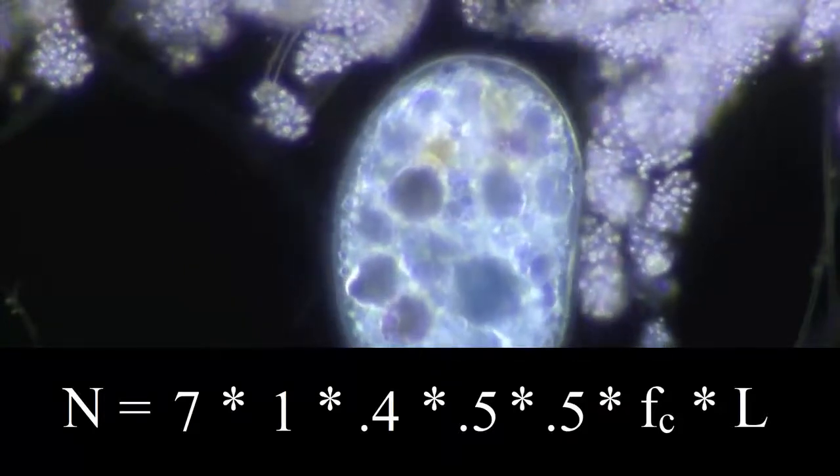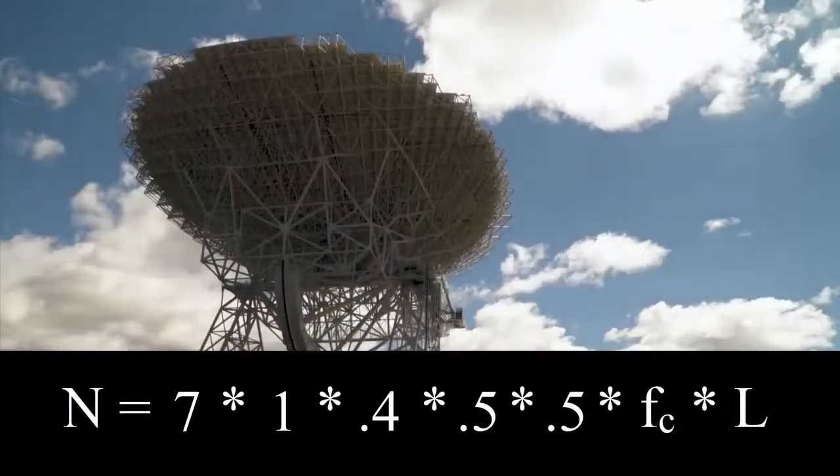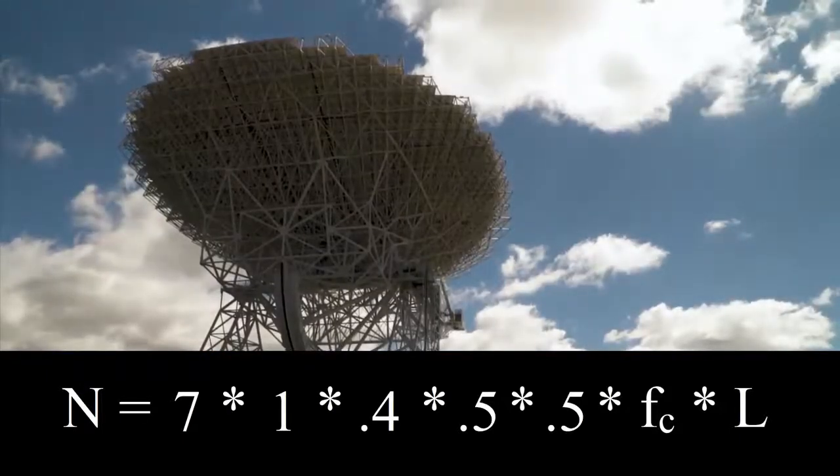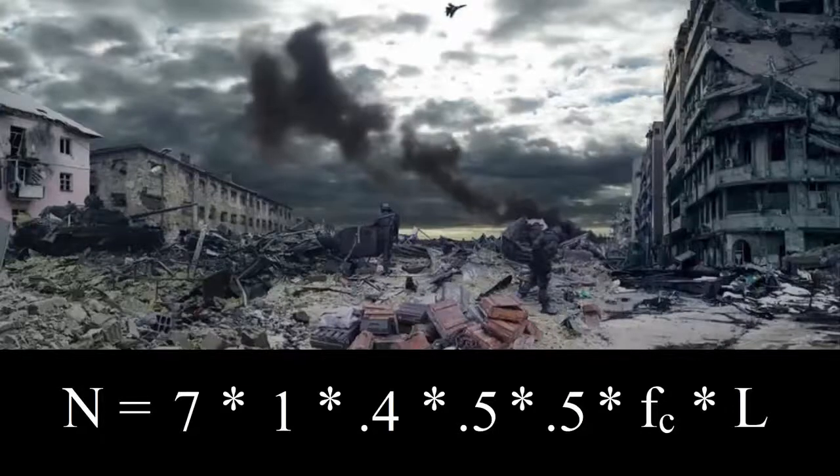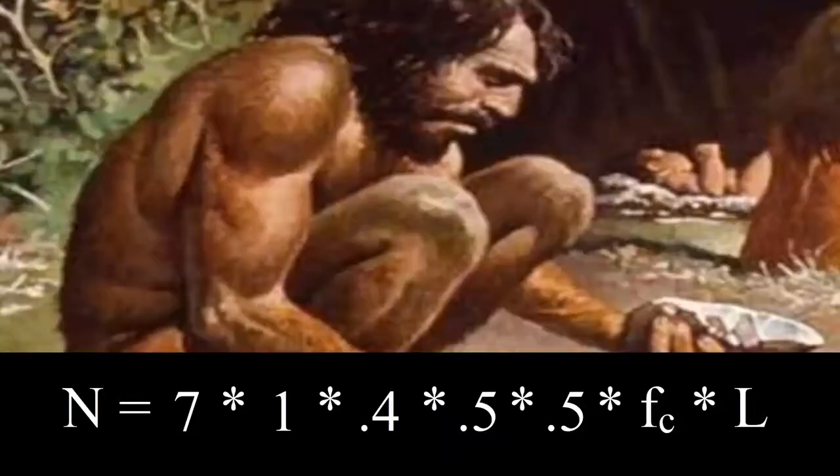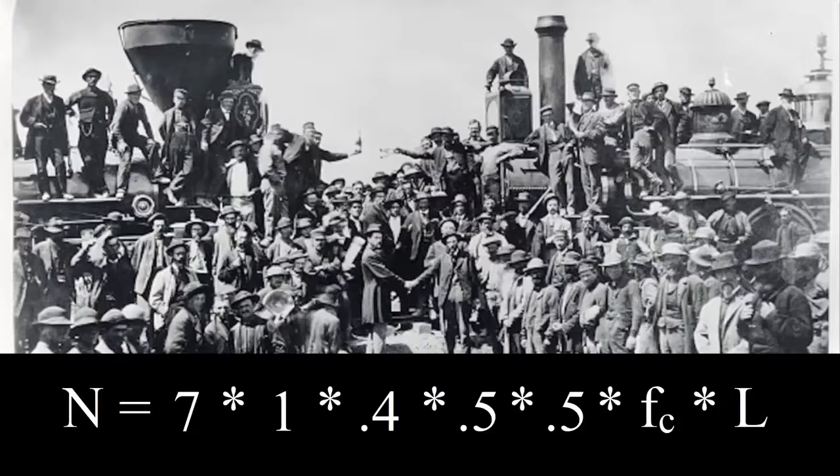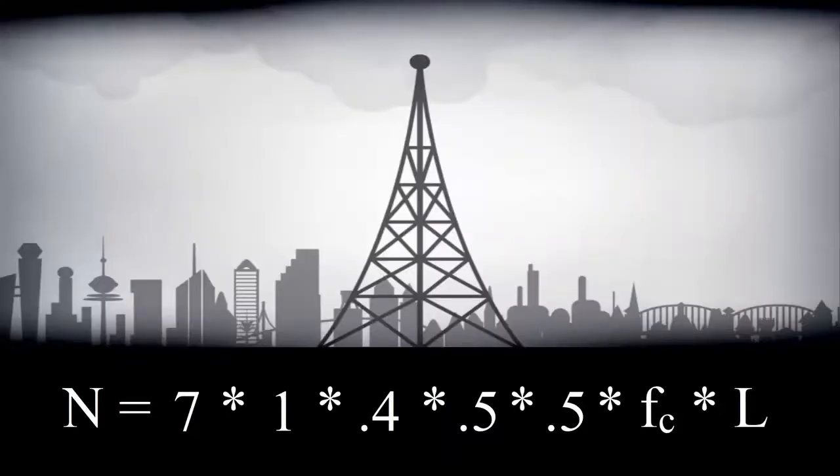The next two parts are FC, fraction of planets with intelligent life capable of interstellar communication, and L, years that civilization remains detectable, somewhat go hand in hand, so we'll look at these at the same time. Modern humans, like you and me, only evolved around 200,000 years ago. Civilization as we know has only been around for 6,000 years, and industrialization started in the 1800s. We've only been broadcasting radio for around 100 years.